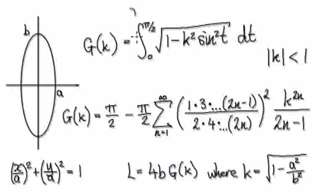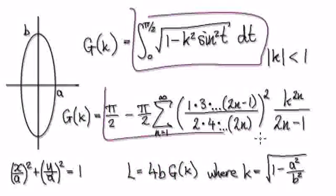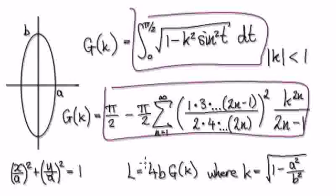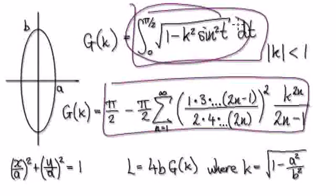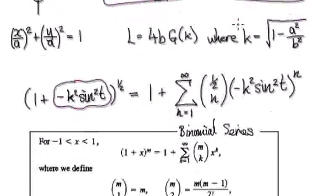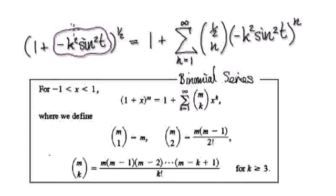Our aim is to get from here to here, and then we can work out the circumference of the ellipse. We don't know how to integrate this directly, so we use the Binomial series to turn this into a series.